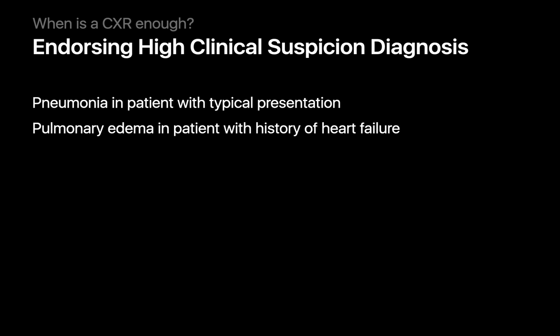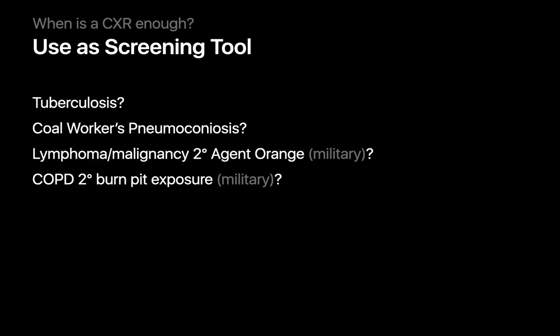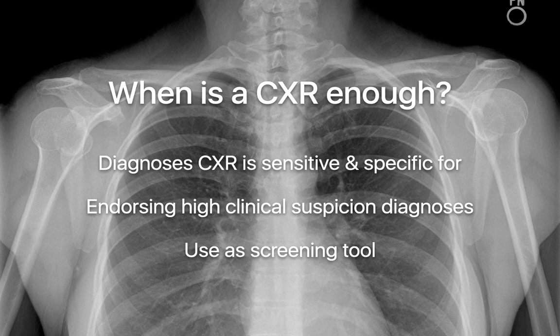And finally, there are situations where what we're looking for is a disease that might involve a gold standard test that's perhaps cost prohibitive to run on every potential patient, but for which chest x-rays can serve as an inexpensive first-line screening test, like in tuberculosis, occupational lung diseases like coal worker's pneumoconiosis, or lymphoma and other malignancy searches related to exposure to military herbicides like Agent Orange. So these are some of the most common situations where a chest x-ray alone is often an appropriate study rather than chest CT or chest MRI.